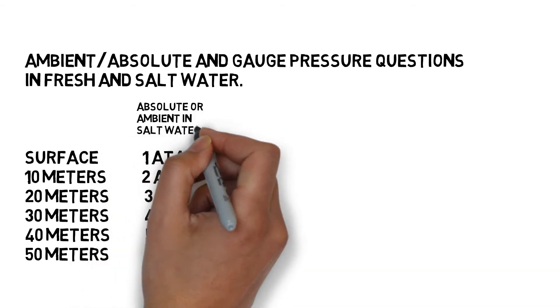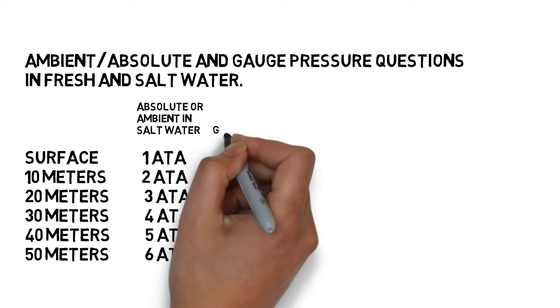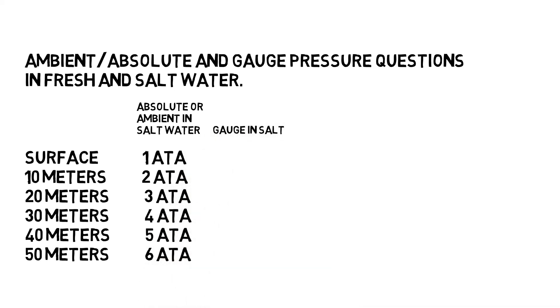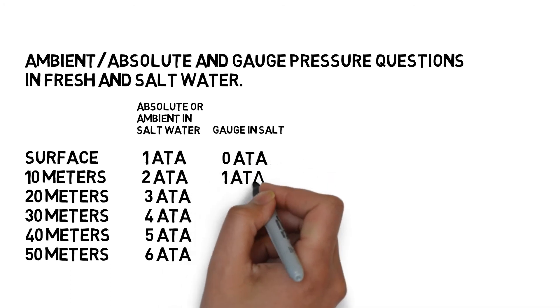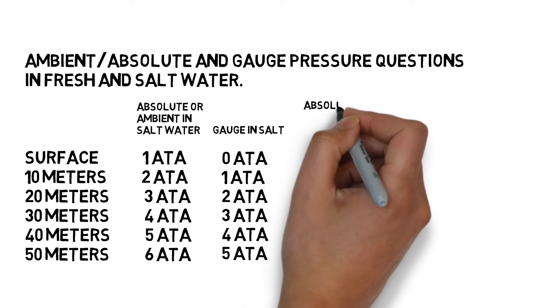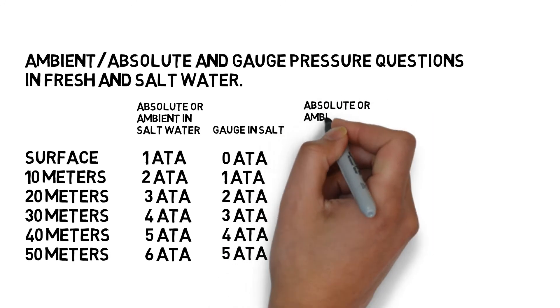We can very easily find the ambient or absolute pressure in salt water. The gauge pressure is just one less than that. So the gauge pressure at the surface is zero atmospheres. You don't want your gauge showing anything. And then we've got one, two, three, four, five atmospheres gauge pressure at 50 meters of salt water.